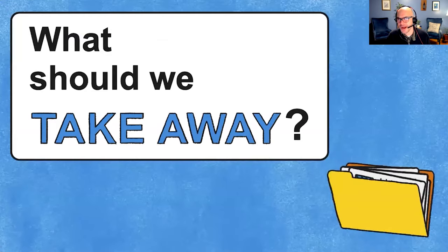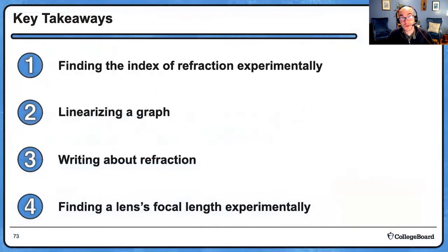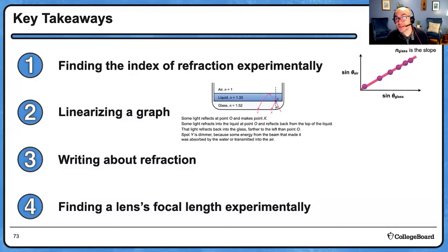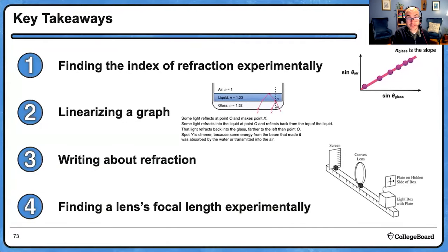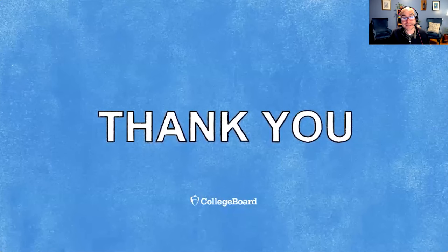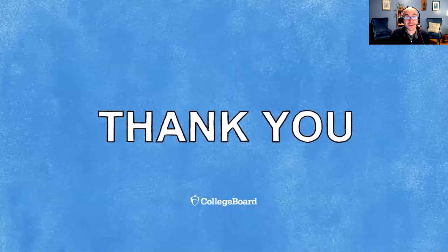We've done it. I showed you how to find the index of refraction experimentally using the slope of a linearized graph. We wrote about refraction and drew pictures of it. We talked about ways to find a lens's focal length experimentally and drew the path of light through that lens. We have now discussed six of the seven topics in AP Physics 2. It has been an absolute blast, and I can't wait to hang out with you next time as we tackle modern physics, and then Mr. Strotterman sends you out ready for success on the AP Physics 2 exam. Thanks a lot, everybody!